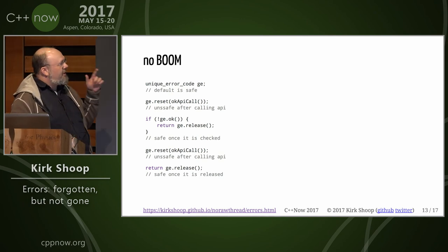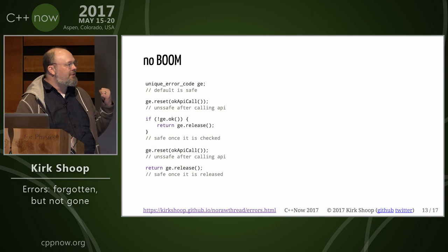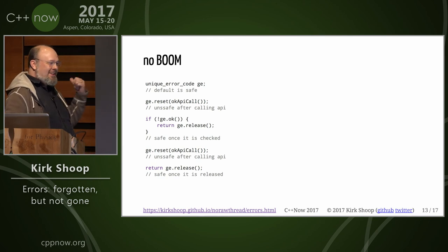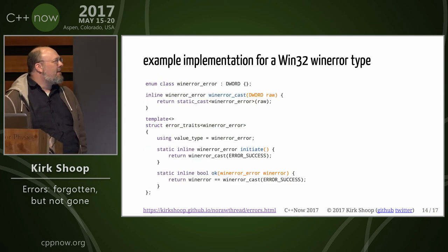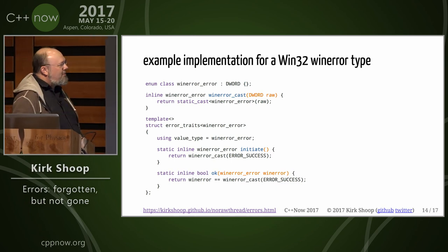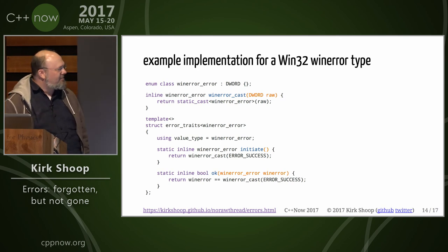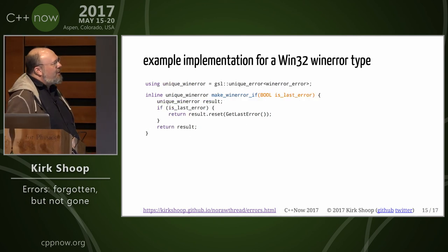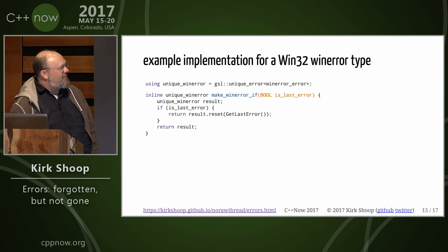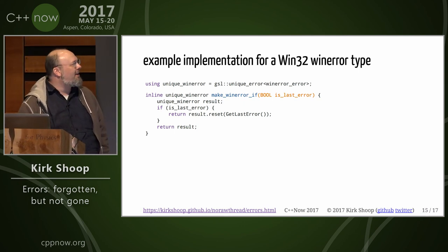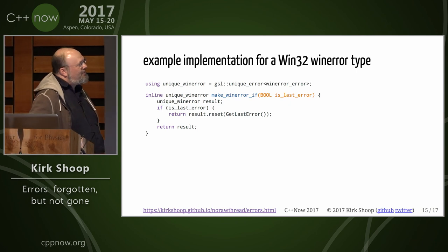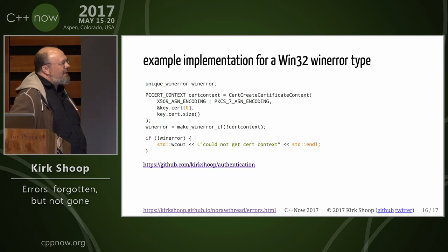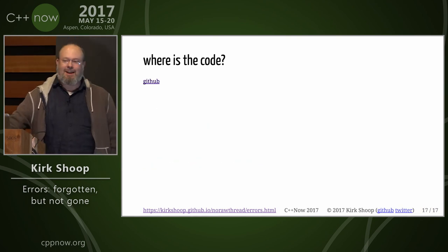If you return the unique error itself as the result of the function, then the ownership of the failure — the impending doom — transfers automatically into the caller. You can expand it with traits. All you have to do is tell it what to initialize the error to and what constitutes OK. We can also build utilities that let you take the very common bool return value of a Windows API, get the last error, and return that as a unique win error, so that you can do things like creating an assert context, making a win error if, and then checking the win error. The code's on GitHub.